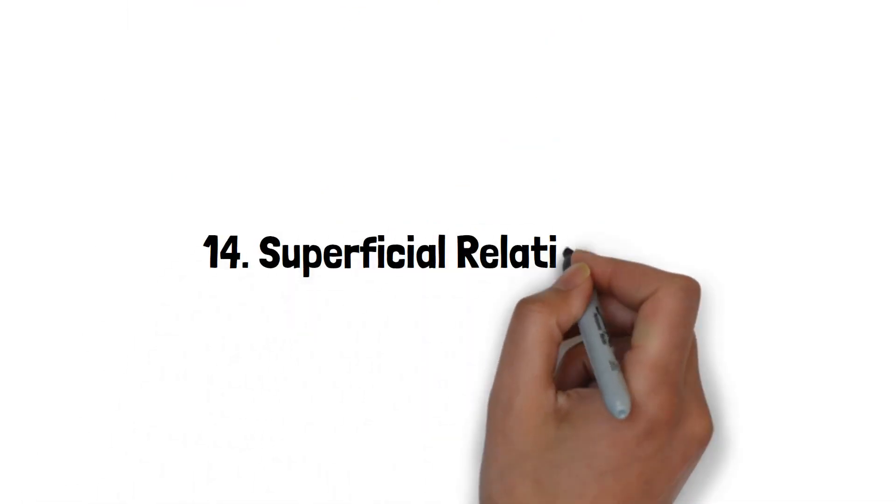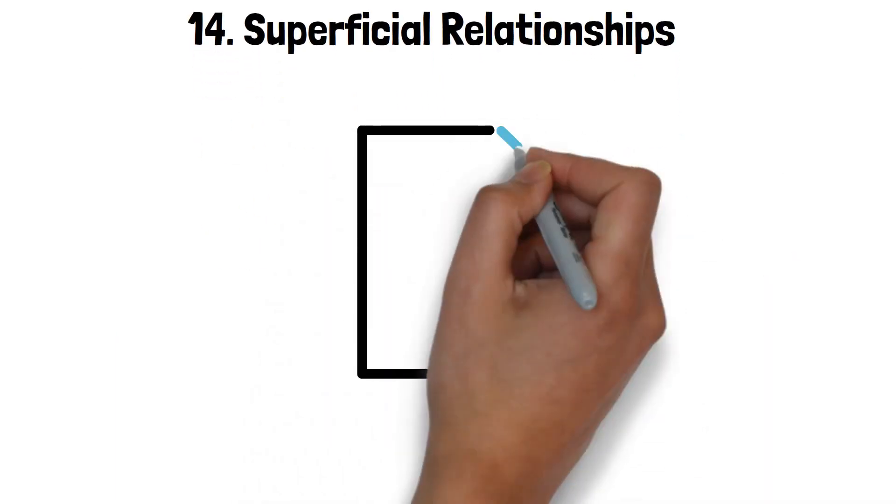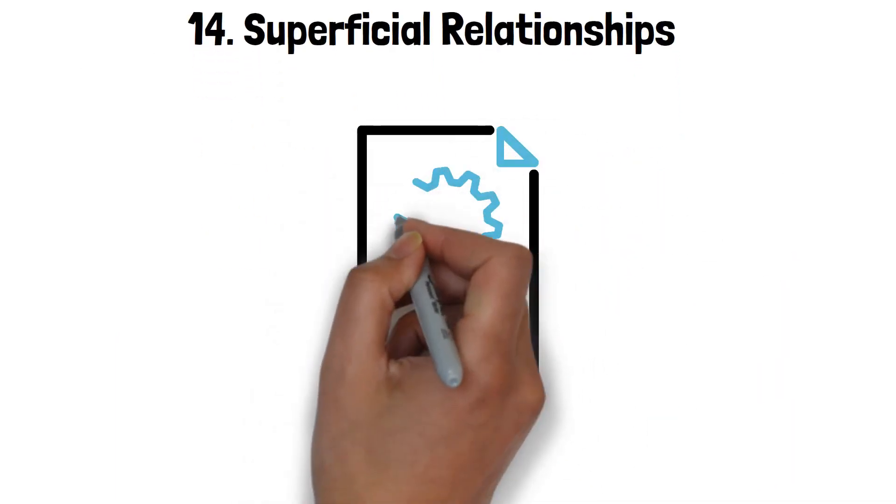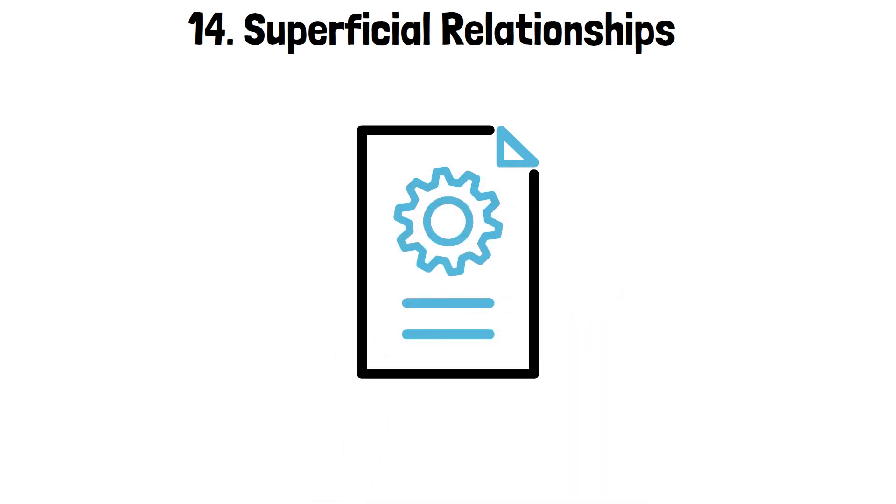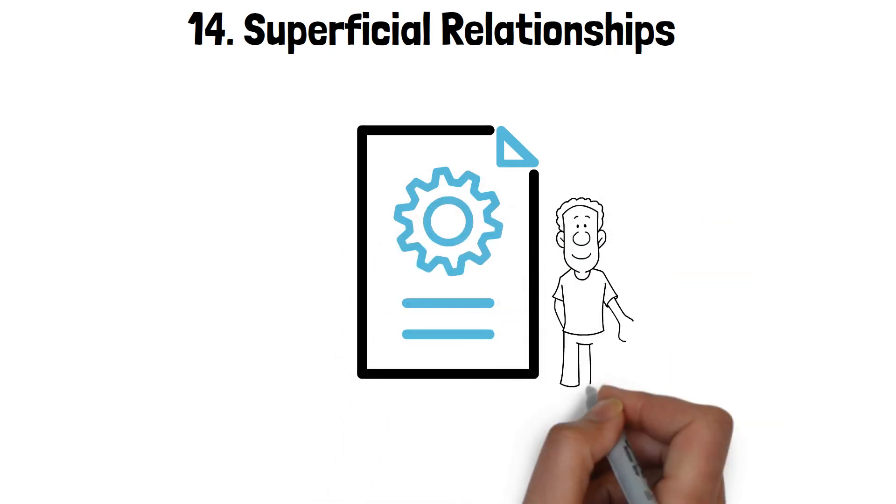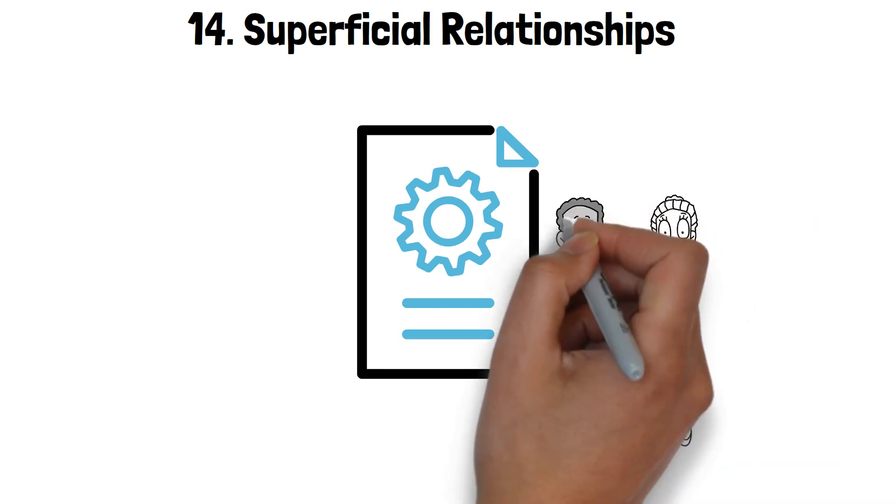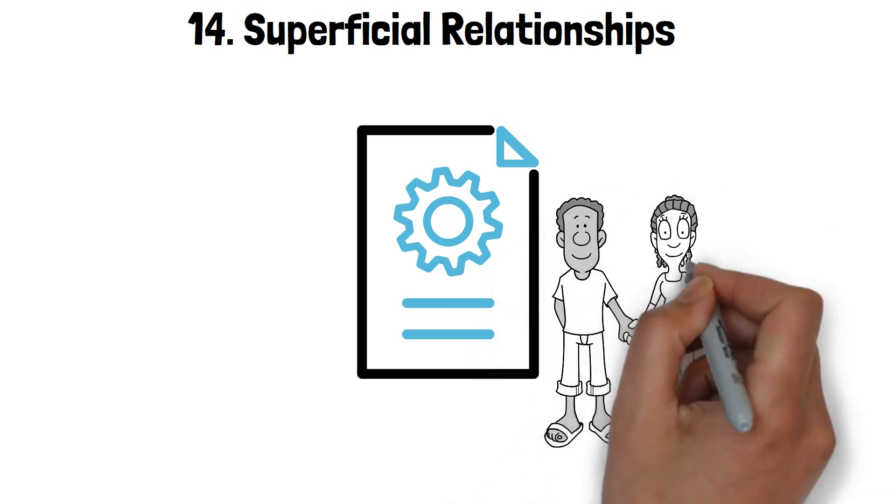14. Superficial Relationships. Narcissistic wives tend to cultivate relationships that, at their core, are superficial and transactional. They often struggle to form deep, meaningful connections with others, including their spouses.